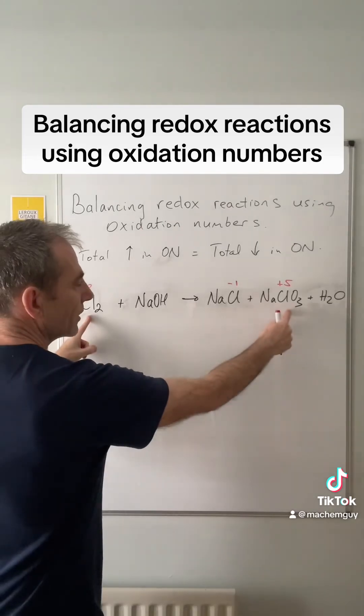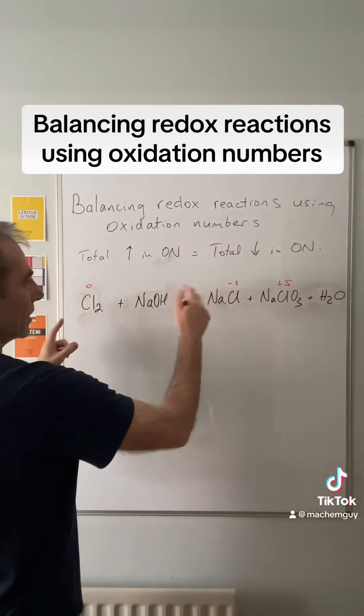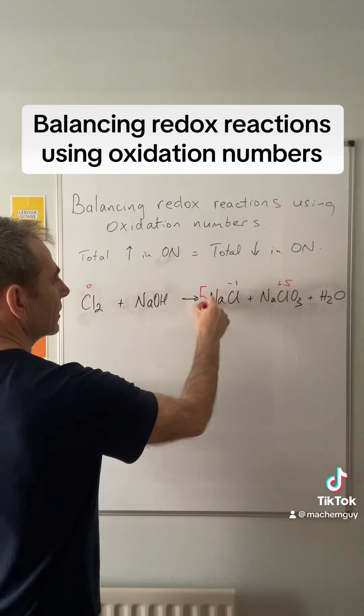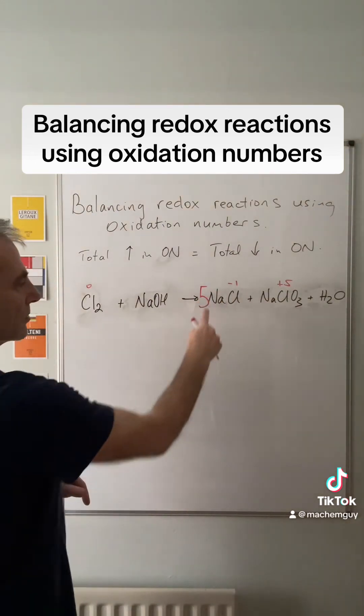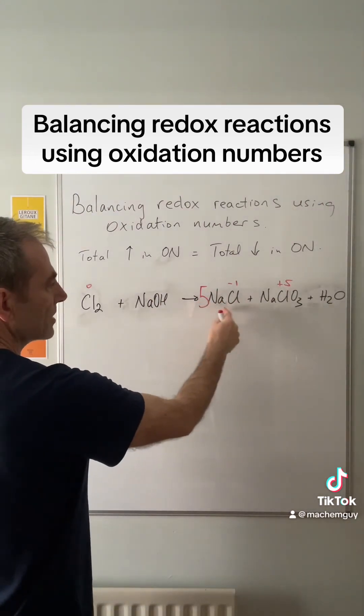Obviously we've got to get that change of one to match a change of five, so stick a five in front of that. If we count up the chlorines now, we've got five plus one, so six. Stick a three in front of there.